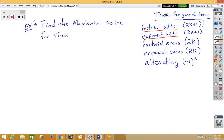Factorial evens might be 2k factorial. Exponent evens would be simply 2k. And if the series happens to alternate positive, negative, positive, negative, then we could do negative 1 to the k.